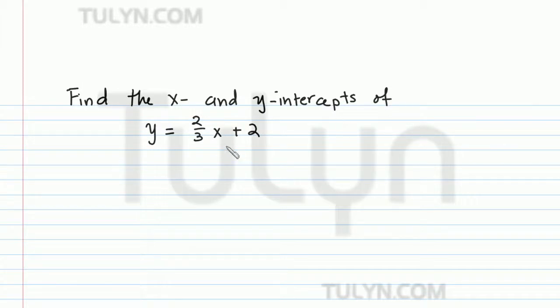If I want you to find the x and y intercepts of this equation, y equals two-thirds x plus two, remember what it means to be an x intercept and a y intercept.